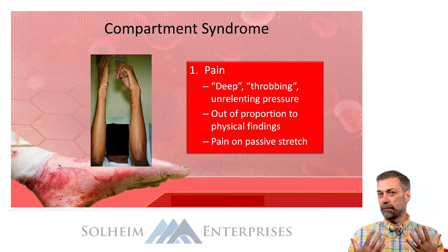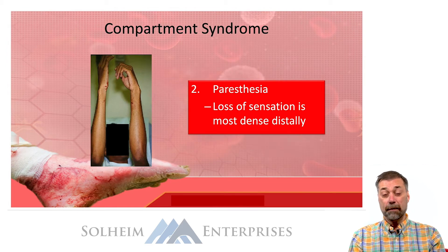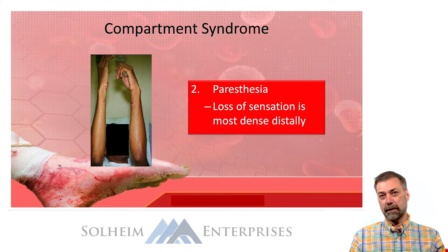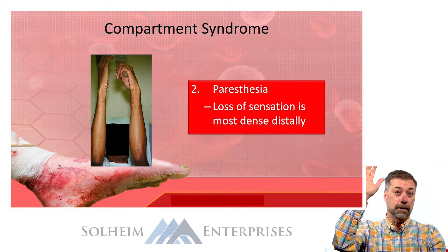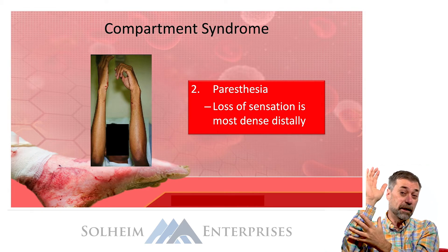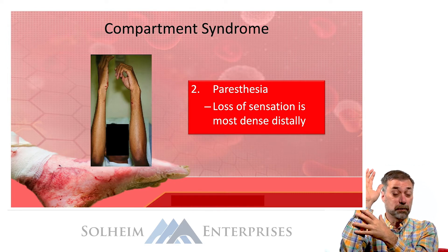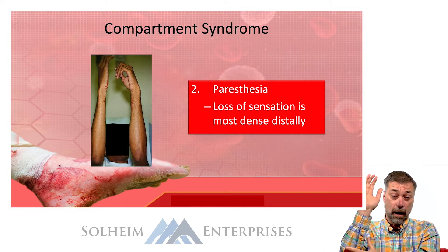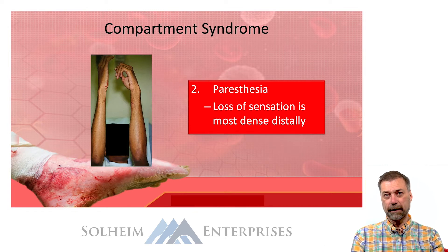After pain comes paresthesia, the second P. This is a bit of a later finding. It involves compression of the nerves and may be described as a sensation of pins and needles that starts distal to the injury and moves towards it. As the compartment pressure increases, the pins and needles keep moving down the arm or up the leg.